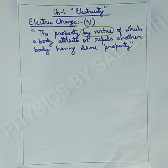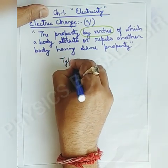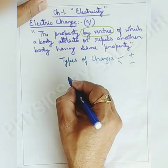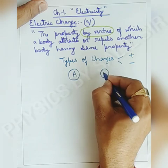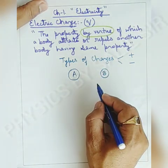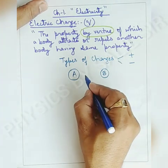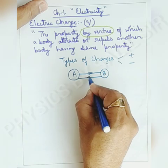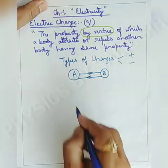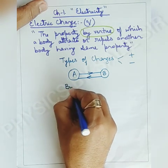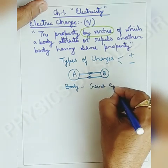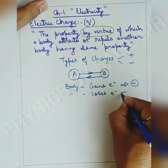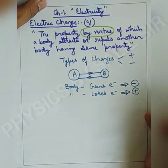Now, types of charges. There are two types of charges: positive charge and negative charge. Suppose there are two bodies, body A and body B. If these two bodies are rubbed together, it is possible that electrons can flow from body A to body B, or electrons can flow from body B to body A. The body which gains electrons will become negatively charged, and the body which loses electrons will become positively charged.